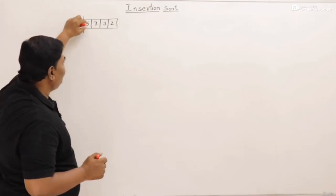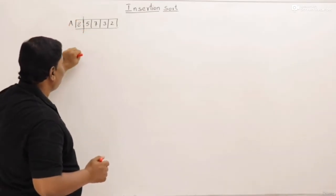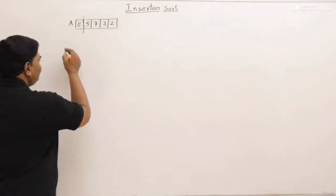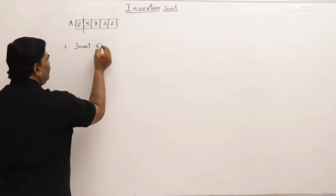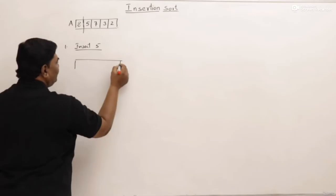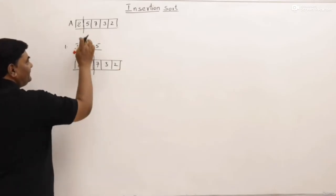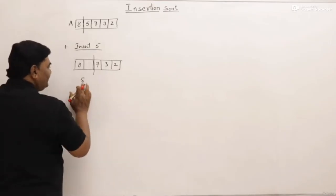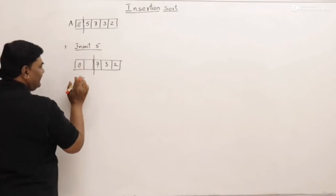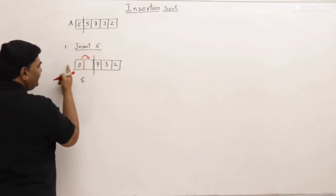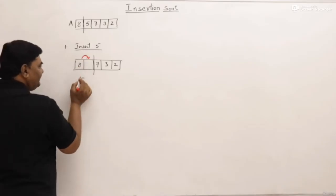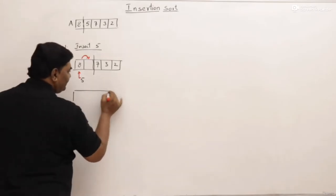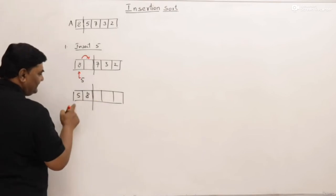From the unsorted list we take out an element and insert it into the sorted side. Let us start the process. First pass: insert five. The first element eight remains as is. For inserting five, we check — eight is greater than five, so shift it. There is nothing else to check, so we have reached the first place and insert five there. After inserting five, the result is five, then eight — till here the list is sorted.